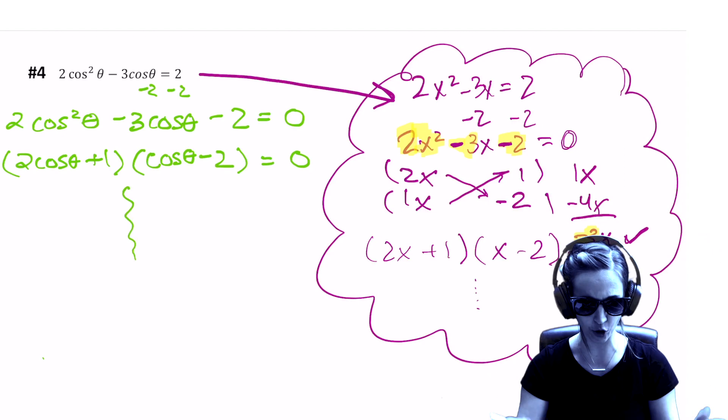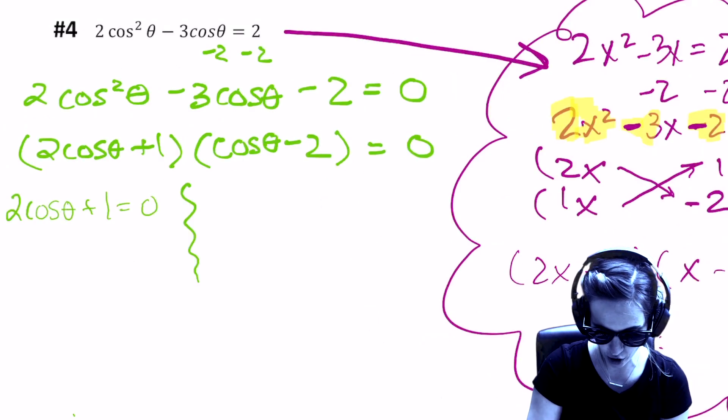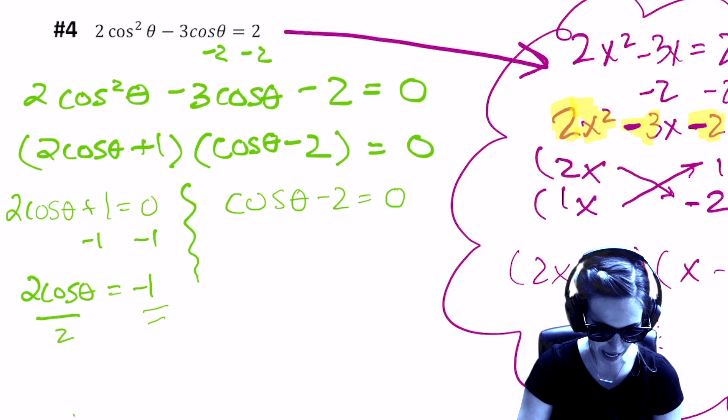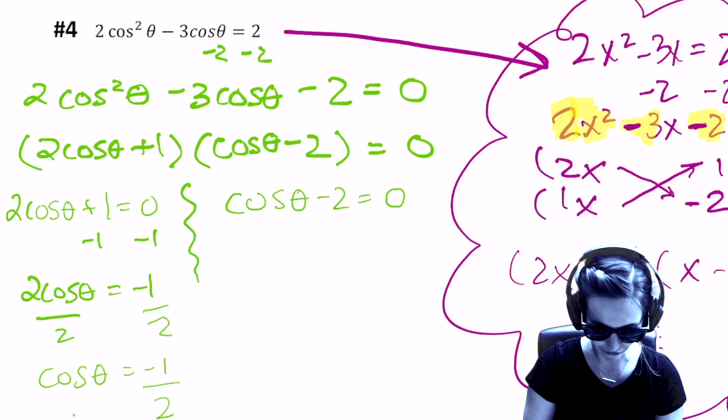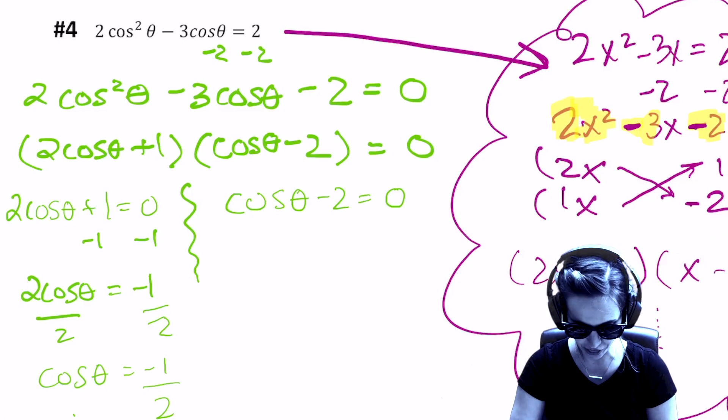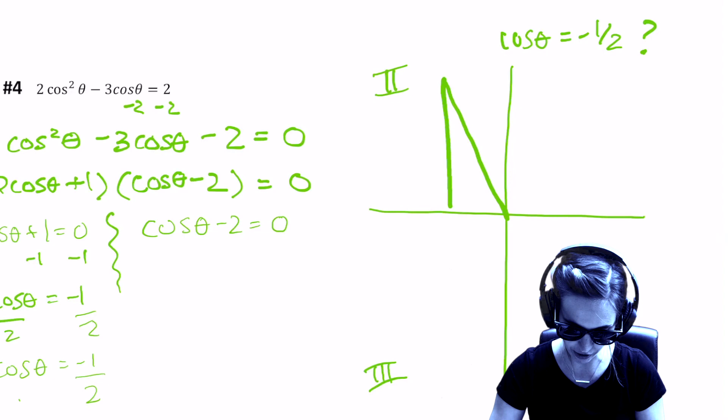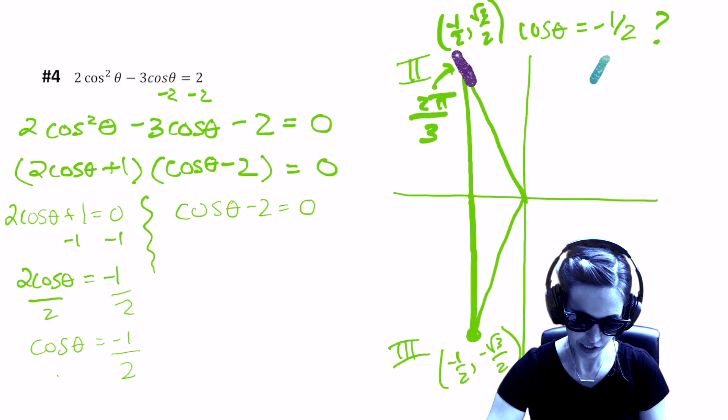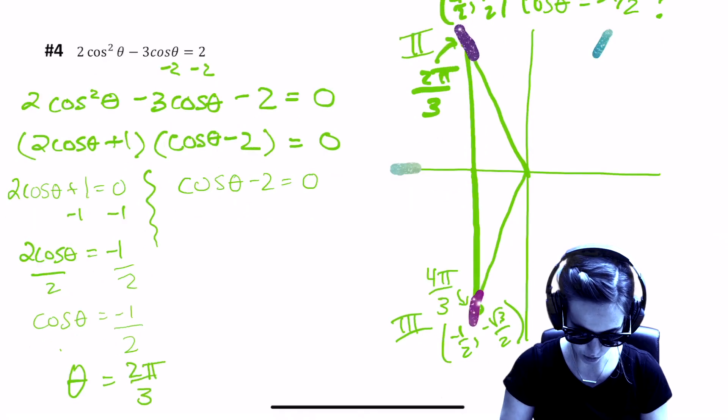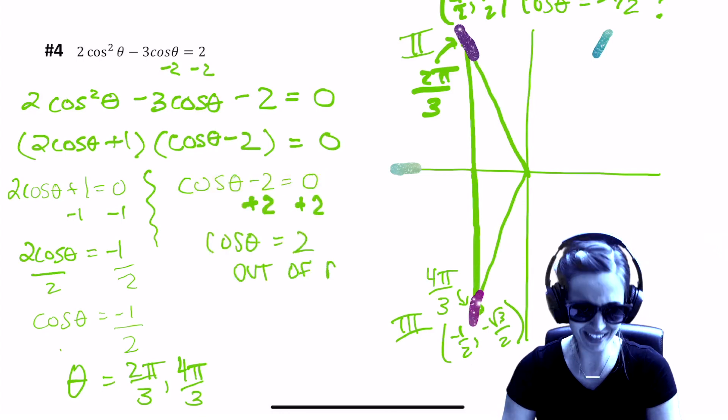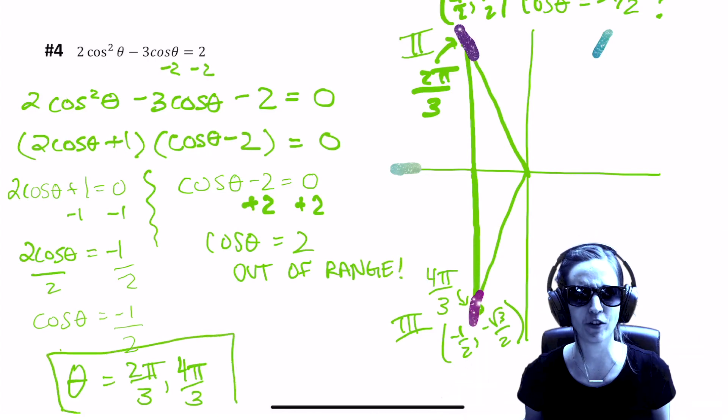We have to factor it: 2 cosine theta plus 1 times cosine theta minus 2. Zero product property: 2 cosine theta plus 1 equals 0, cosine theta minus 2 equals 0. Let's solve. Minus 1, minus 1. 2 cosine theta equals negative 1. Divide off the 2. Cosine theta equals negative 1 half. Okay, so we got cosine theta equals negative 1 half. We got to figure out what the theta values are. Unit circle: cosine theta equals negative 1 half. That's x is negative, so that's going to be this triangle on the unit circle and this triangle on the unit circle. That is 2 pi thirds, 4 pi thirds. So theta equals 2 pi over 3 and 4 pi over 3. Cosine theta minus 2 equals 0, cosine theta equals 2. It's not in range, so we have our answer. Theta equals 2 pi over 3 and 4 pi over 3. Agent R, 2 pi thirds, 4 pi thirds. Missile terminated.